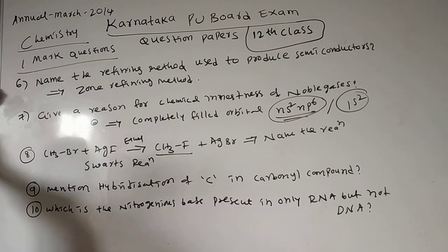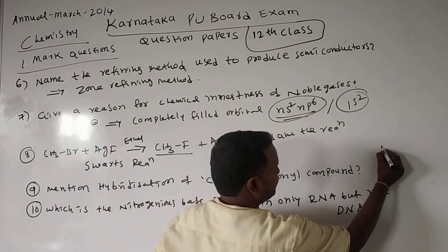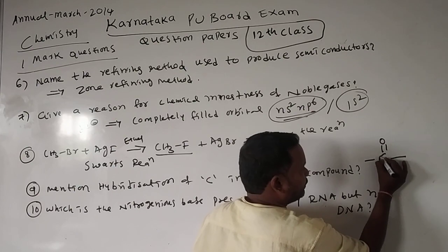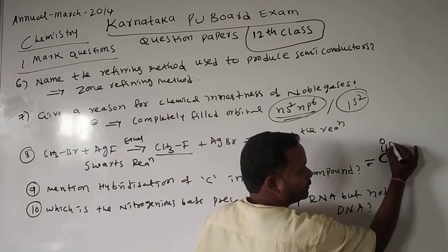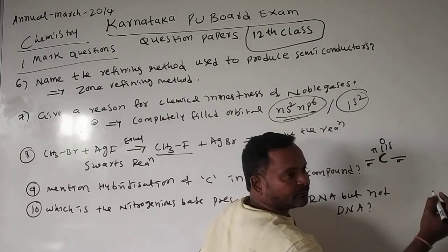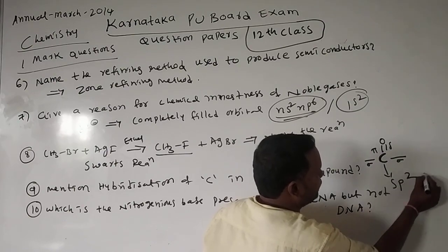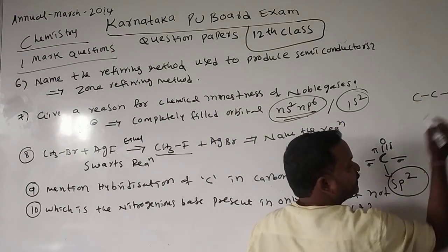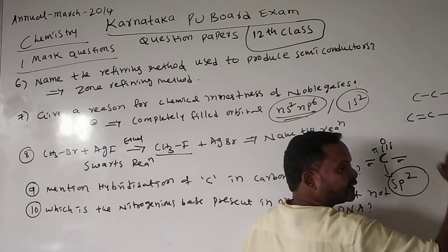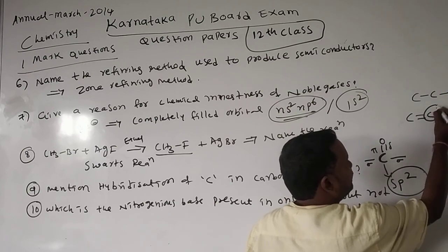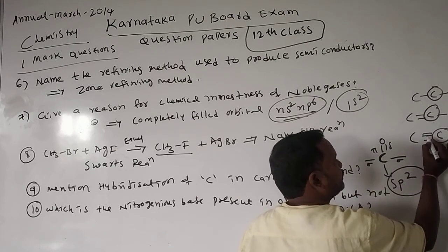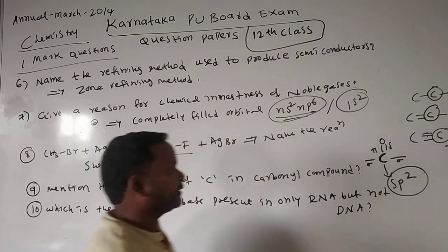Ninth question: mention the hybridization of carbon in a carbonyl compound. A carbonyl compound contains a C=O (C double bond O) group. The carbon in the carbonyl group has three sigma bonds and one pi bond. If carbon is attached to one pi bond, it exhibits sp2 hybridization. If carbon has only single bonds (carbon-carbon), it is sp3 hybridization. If carbon is attached to two pi bonds, it exhibits sp hybridization.